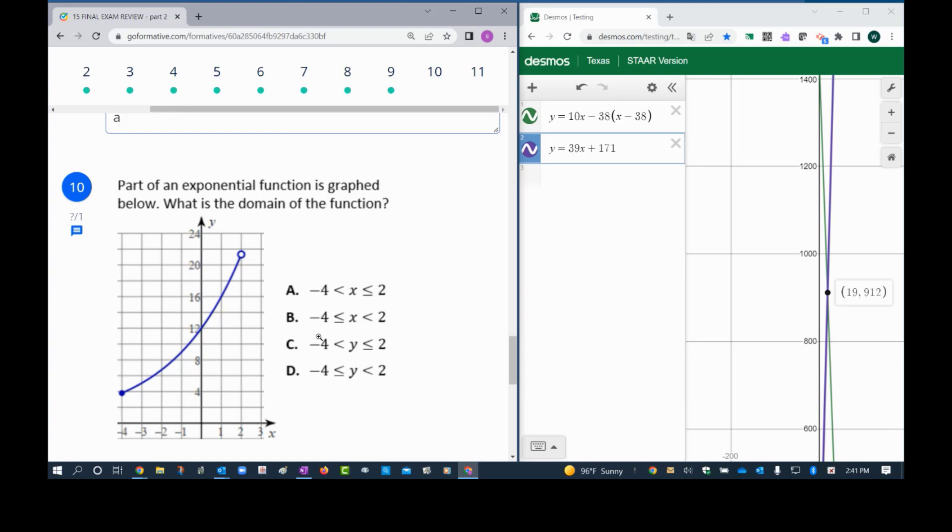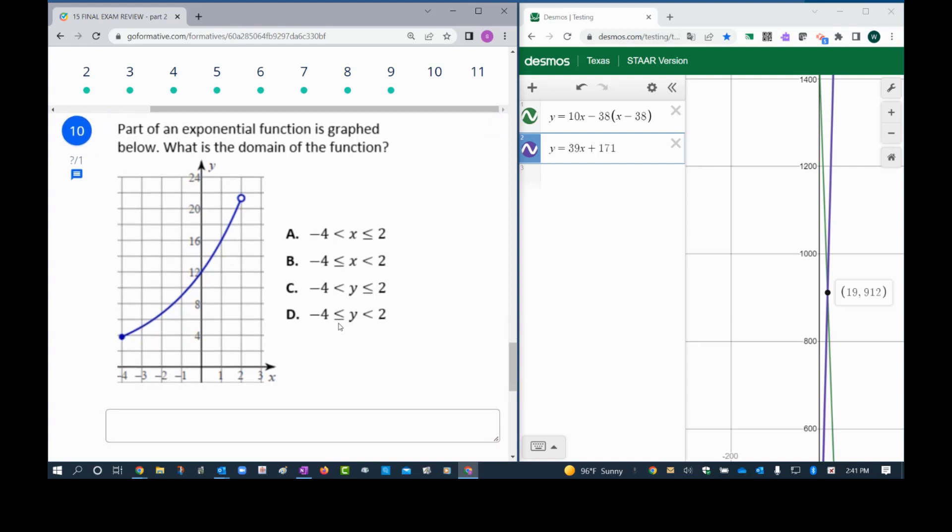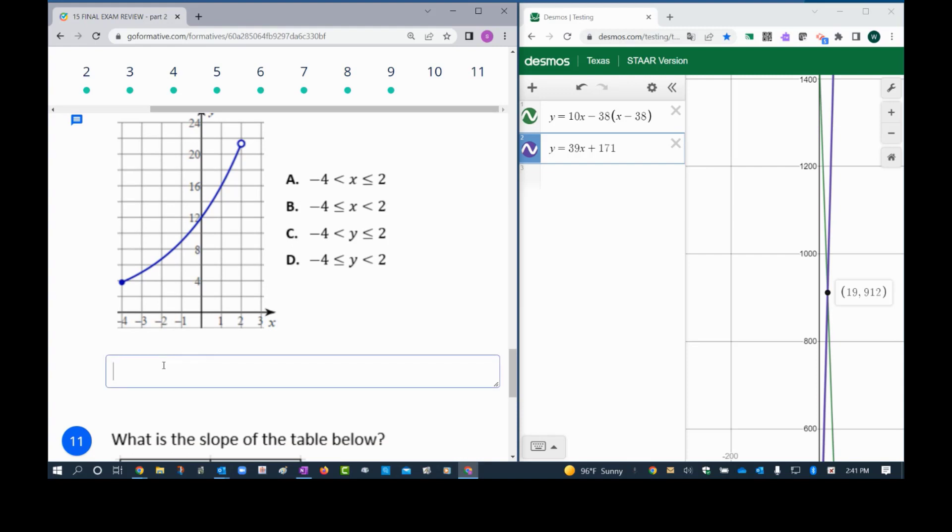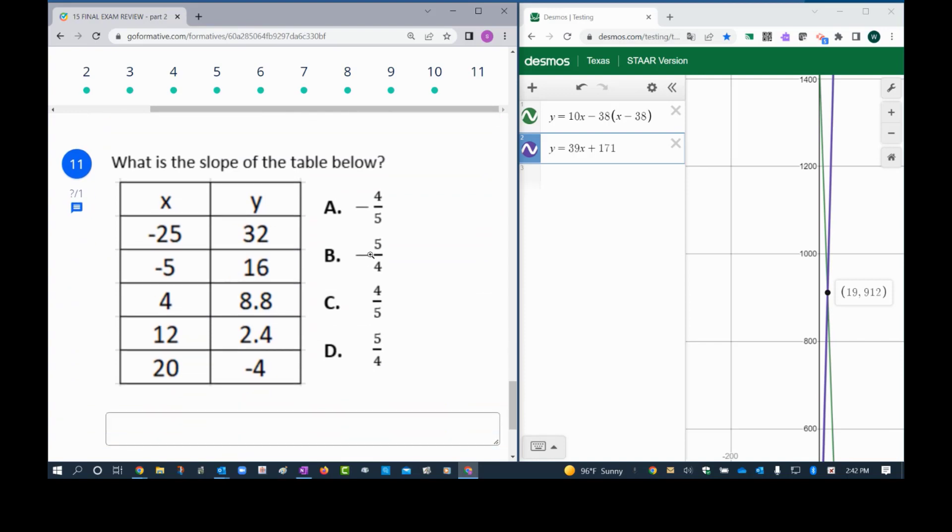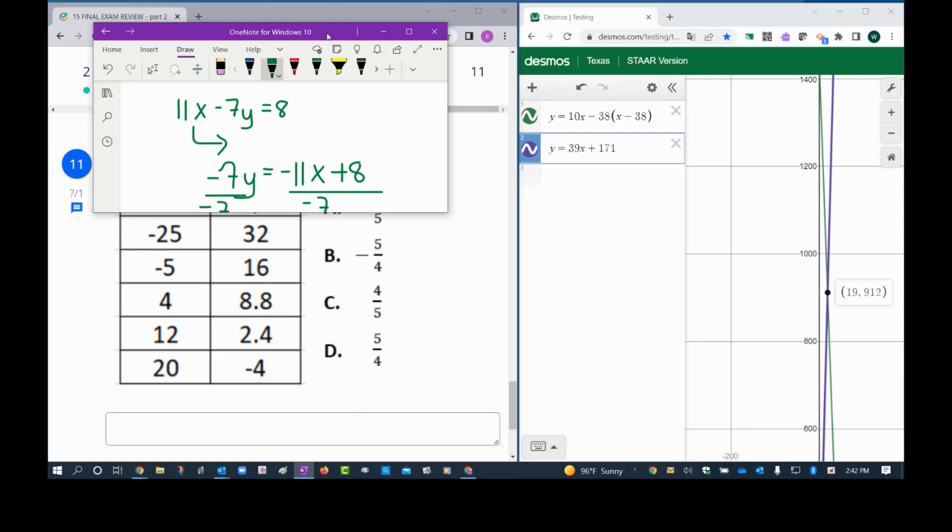But notice that is a solid point, so it will be with the dash, so right there we already know that it's going to be letter B. Just to be sure, the last place we touch is positive 2 without a dash because the point is empty. And the last problem is to find the slope, so right there we're going to need the scratch paper, so I need to pull my scratch paper again.